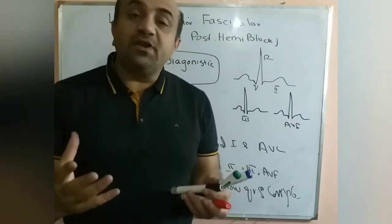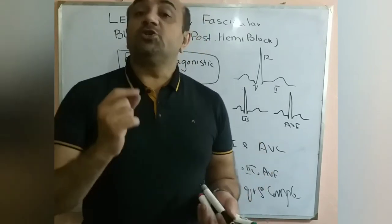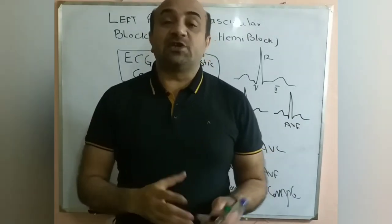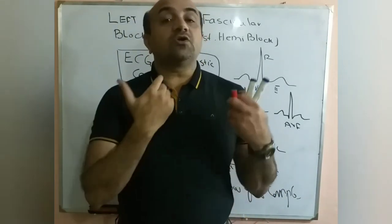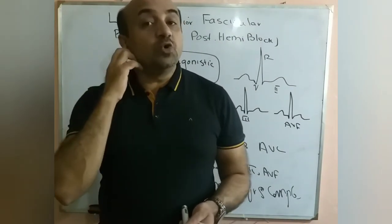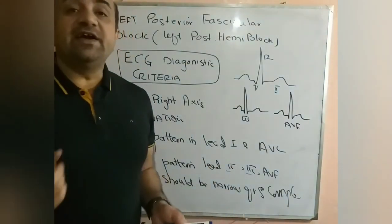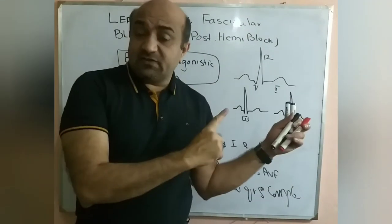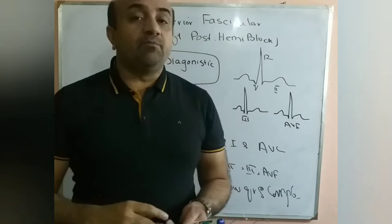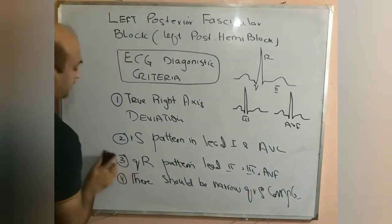Other causes of right axis deviation that must be excluded include: pulmonary embolism, right ventricular hypertrophy, and tricyclic antidepressant drug overdose. Tricyclic antidepressant overdose is excluded by history. In right ventricular hypertrophy, there will be right axis deviation with a tall R wave in lead V1. In pulmonary embolism, there is the McGinn-White sign — also known as S1Q3T3.